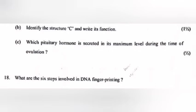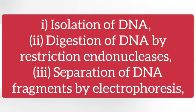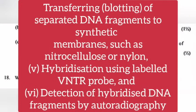Question 18: What are the six steps involved in DNA fingerprinting? Answer: 1. Isolation of DNA. 2. Digestion of DNA by restriction endonucleases. 3. Separation of DNA fragments by gel electrophoresis. 4. Transferring of separated DNA fragments to synthetic membranes such as nitrocellulose or nylon. 5. Hybridization using labeled VNTR probe. 6. Detection of hybridized DNA fragments by autoradiography.